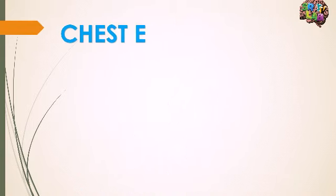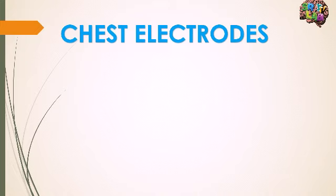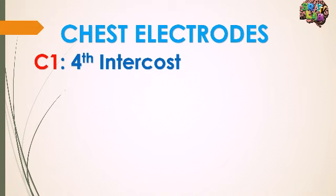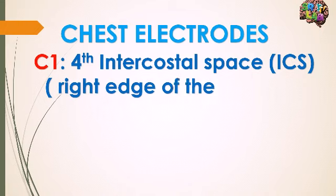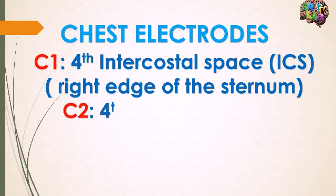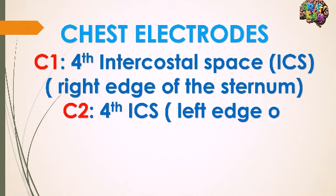Now let's see the placement of chest electrodes. C1 is placed at the fourth intercostal space — the space between the fourth and fifth ribs — at the right edge of the sternum. C2 is placed at the fourth intercostal space but at the left edge of the sternum.